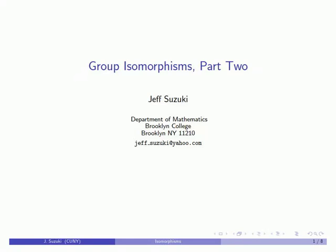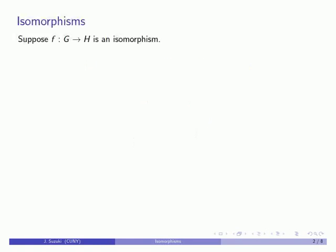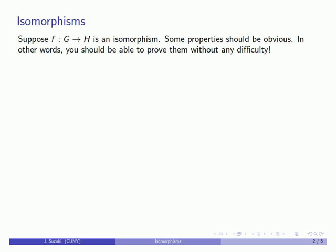Let's continue our discussion about group isomorphisms and consider some isomorphism F that goes from group G to group H. The existence of an isomorphism between the two groups means that some properties should be obvious, which is to say you should be able to prove them without difficulty and you should take the time to prove them.